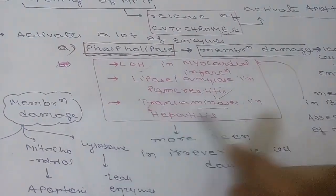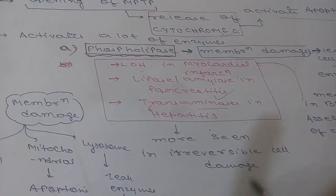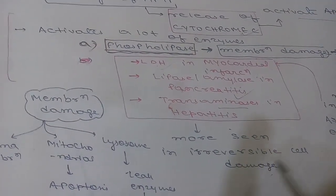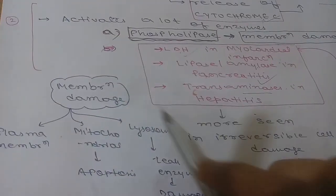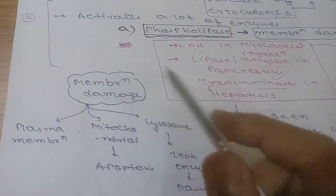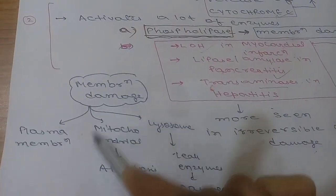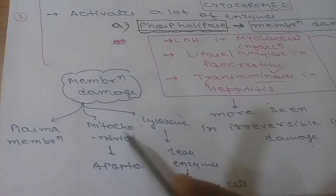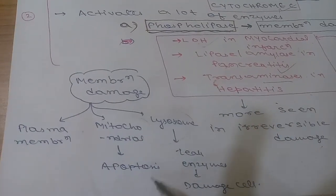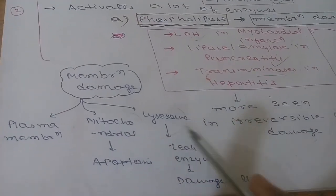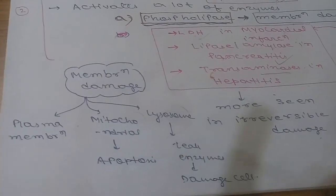Enzyme leakage is seen mostly in irreversible cell damage. Membrane damage can involve the plasma membrane, mitochondrial membrane, or lysosome. Mitochondrial damage leads to apoptosis. Lysosomal damage causes leakage of enzymes, which further damage the cell.